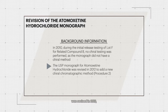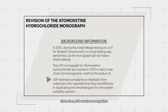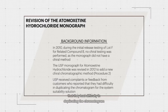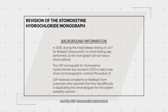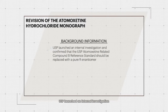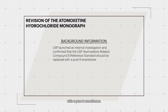The USP monograph for Atomoxetine Hydrochloride was revised in 2012 to add a new chiral chromatographic method, called Procedure 2. Since then, USP received complaints from customers who reported difficulty in duplicating the chromatogram for the system suitability solution containing Atomoxetine Hydrochloride, its S-Isomer, and the USP Atomoxetine Related Compound B using Procedure 2. USP launched an internal investigation and confirmed that the USP Atomoxetine Related Compound B reference standard should be replaced with the optically pure R-enantiomer.